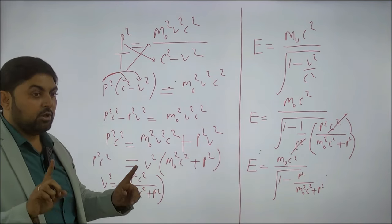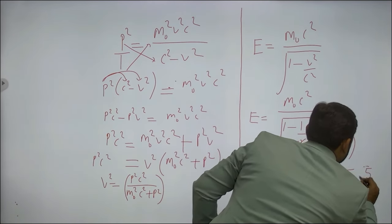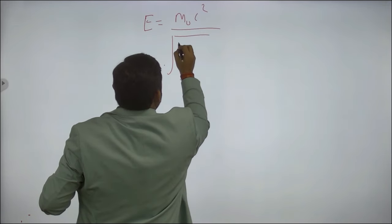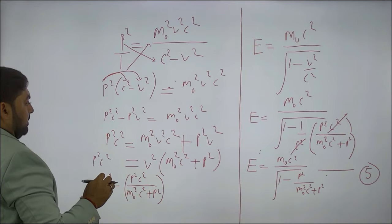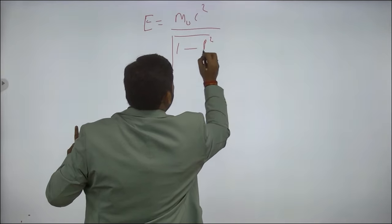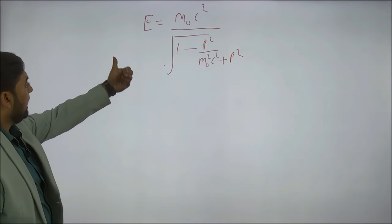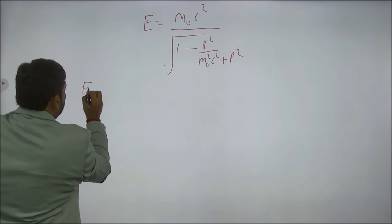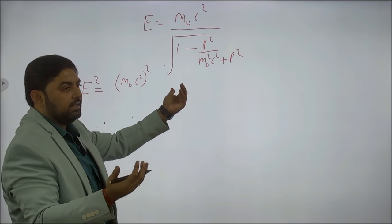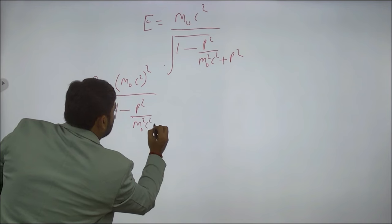This is equation number five. Our objective is E², so we square this equation. E² = M₀²C⁴ / (1 − P² / [M₀²C² + P²]). Taking the root away by squaring: E² = M₀²C⁴ × 1 / (1 − P² / [M₀²C² + P²]).